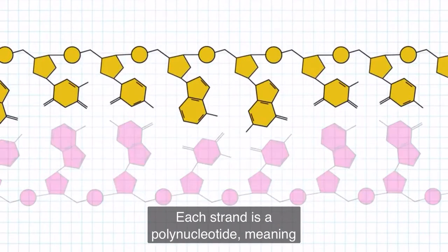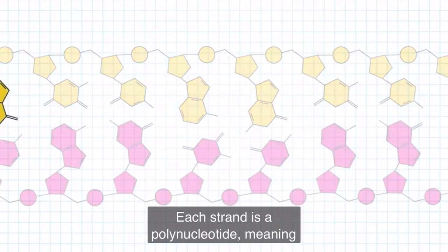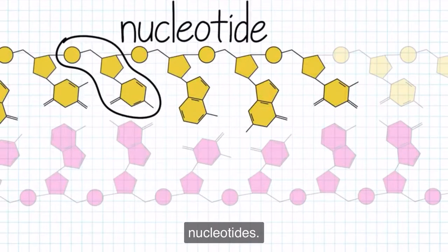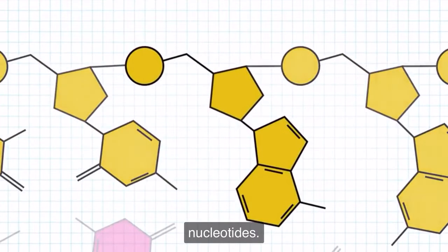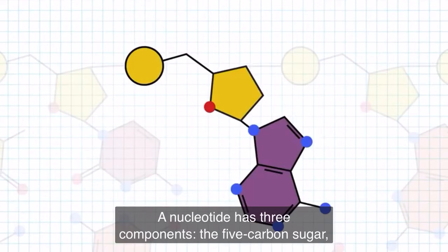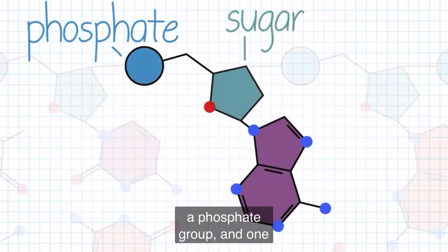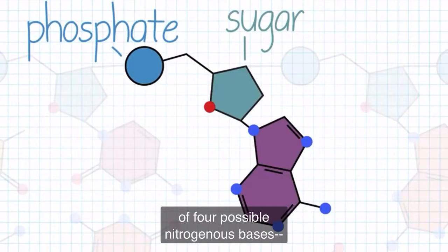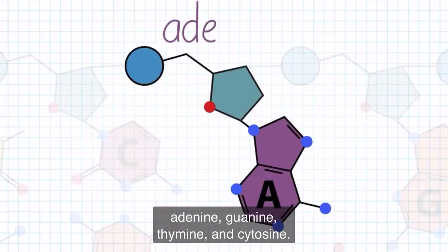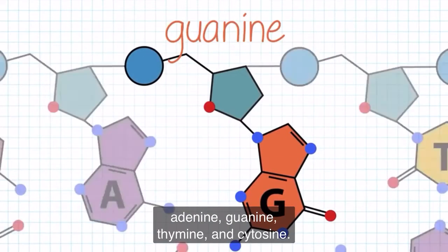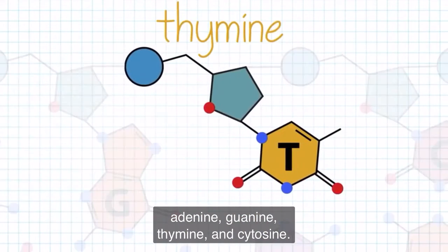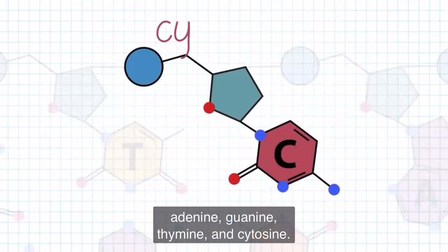Each strand is a polynucleotide, meaning the strand is made up of many individual units called nucleotides. A nucleotide has three components: the 5-carbon sugar, a phosphate group, and one of four possible nitrogenous bases: adenine, guanine, thymine, and cytosine.